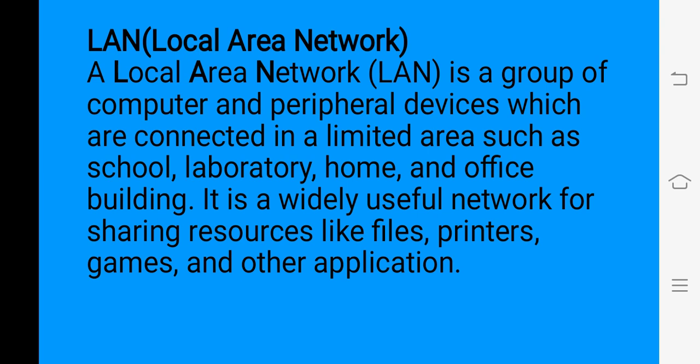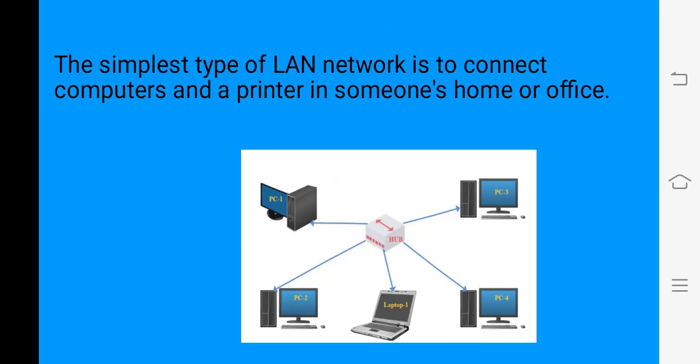In a school building, if different departments are sharing one printer, it is also an example of a local area network. Mostly, local area networks use Ethernet cables for connectivity. The simplest type of LAN connects computers and a printer in a home or office. We can use a hub, network adapter card, and internet cable for it.